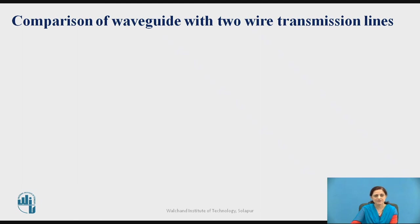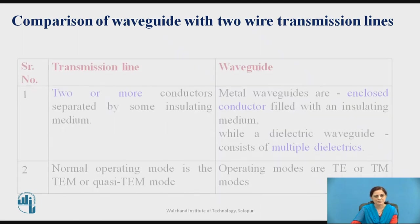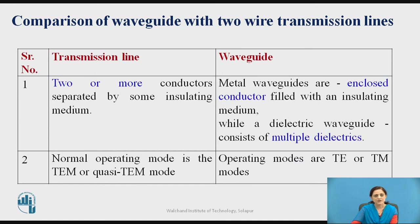Let us see the comparison between the waveguide and two-wire transmission line. In a two-wire transmission line, two or more conductors are separated by some insulating medium. In waveguide, metal waveguides are enclosed conductors filled with an insulating medium, while a dielectric waveguide consists of multiple dielectrics. In a transmission line, the normal operating mode is transverse electromagnetic mode, while in a waveguide, transverse electric or transverse magnetic mode is used.